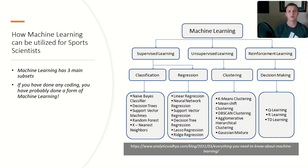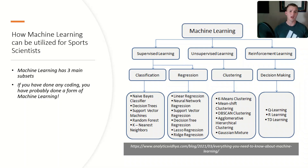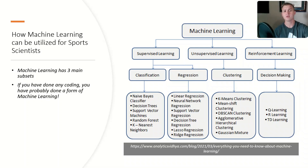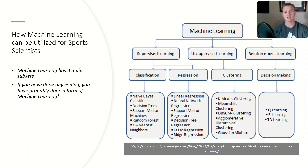Clustering is the process of organizing objects into groups using a machine learning algorithm. And lastly, we have decision making, which is a tool that reduces areas of uncertainty through automatic learning to make sound decisions by analyzing large quantities of data.